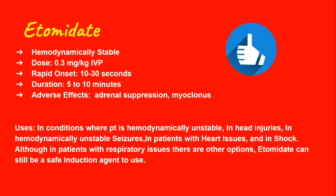Because etomidate is hemodynamically stable, it's going to be used in patients who are unstable — for example, with a soft blood pressure — or patients with head injuries, as it does not lower or increase the blood pressure, because both can be damaging to neuro patients. Lowering BP in a neuro patient can cause ischemia, and increasing it can cause worsening ICP. Etomidate is also useful in unstable seizure patients, patients with heart disease, patients in shock, and even respiratory patients — it's an overall safe medication because it doesn't affect vital signs the way other agents do.